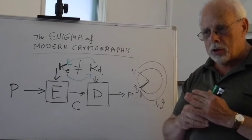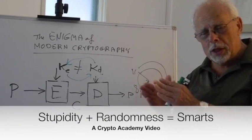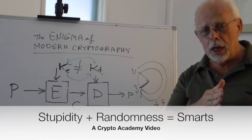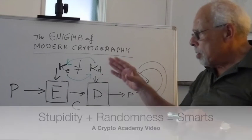I point to the video on 'Stupidity plus Randomness equals Smarts' as one way to handle this challenge. But I want to focus on the very fact that modern cryptography is robust.